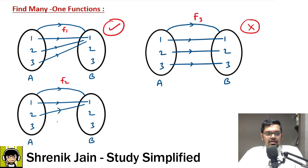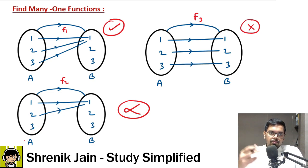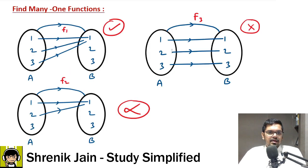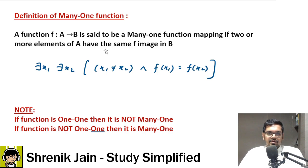For the third example, you might say it looks like a many-one function since some inputs give common output. But it's not a function because every input should be connected to some output, and that is not happening here. Since it's not a function, there's no point discussing many-one. The formal definition: a function f mapping A to B is said to be many-one if two or more elements of A have the same f-images in B.